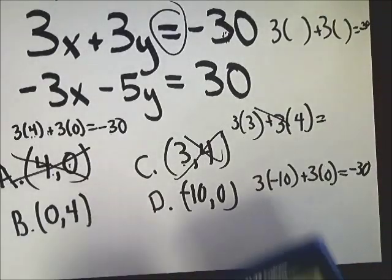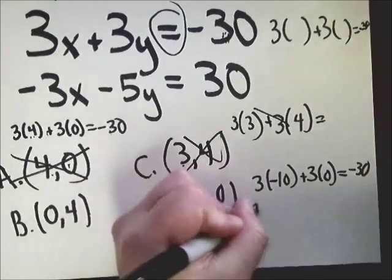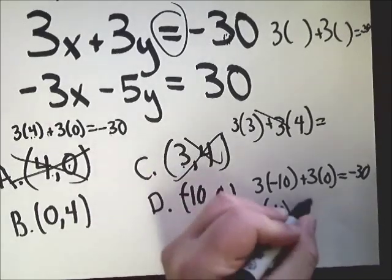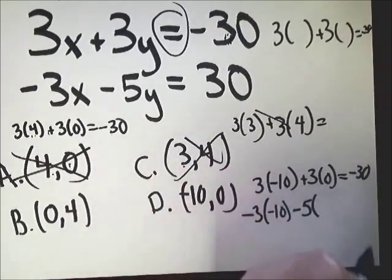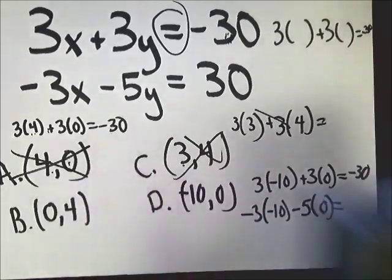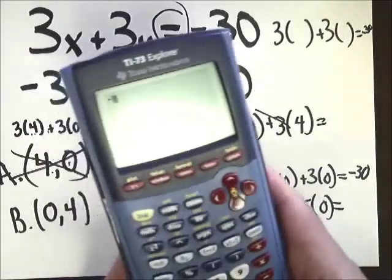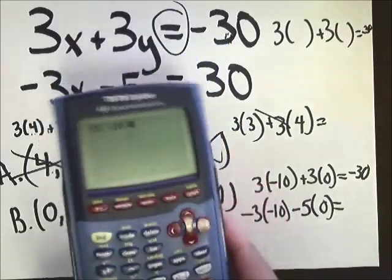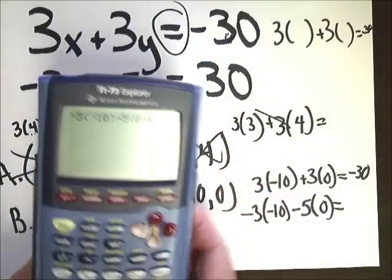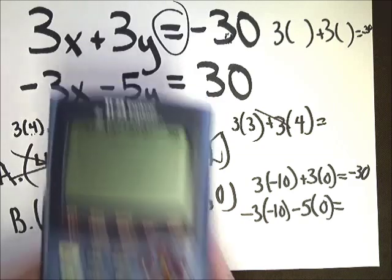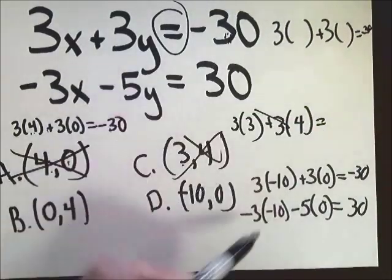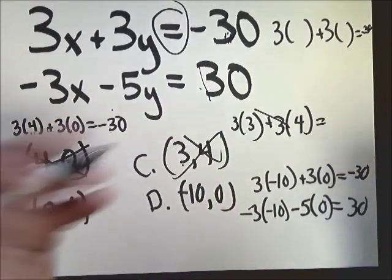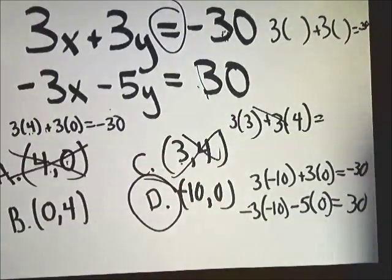You have to try both. So negative 3 parenthesis negative 10 minus 5 parenthesis 0. Negative 3 parenthesis negative 10 minus 5 parenthesis 0. And it gives you 30. This looks suspiciously like this and they have the same numbers as answers. So this is your answer to the question.